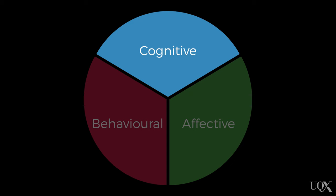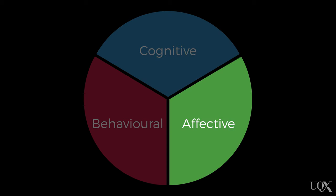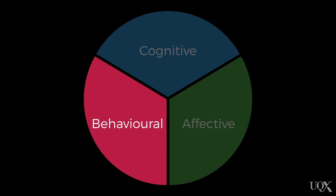The cognitive component — the beliefs or stereotypes that people hold about different groups of people. The affective component — how they feel about them. And the behavioural component — their intention to behave negatively towards a group and its members.